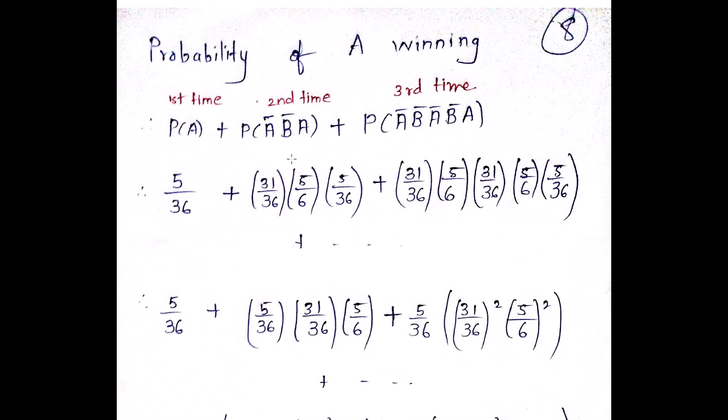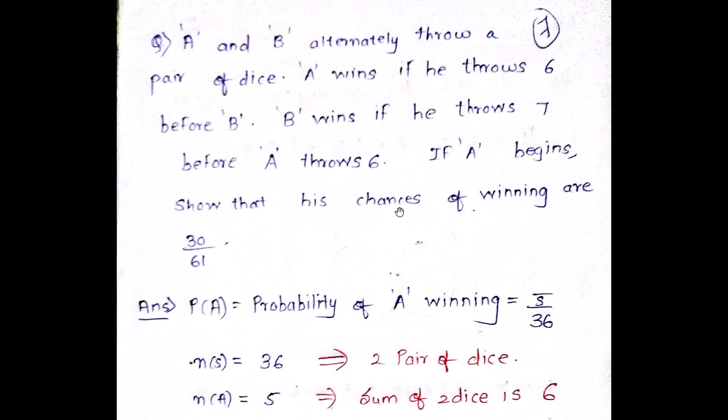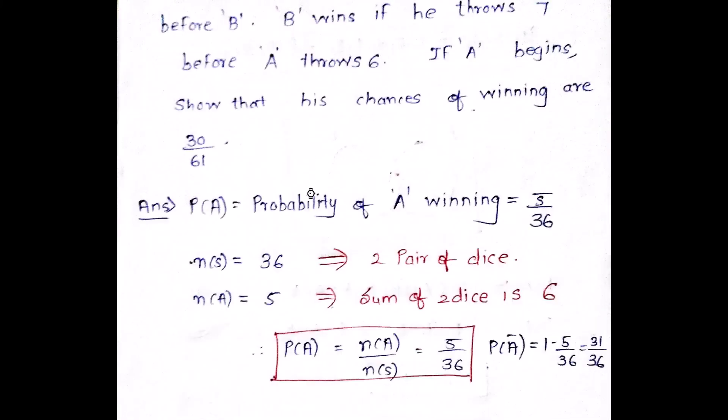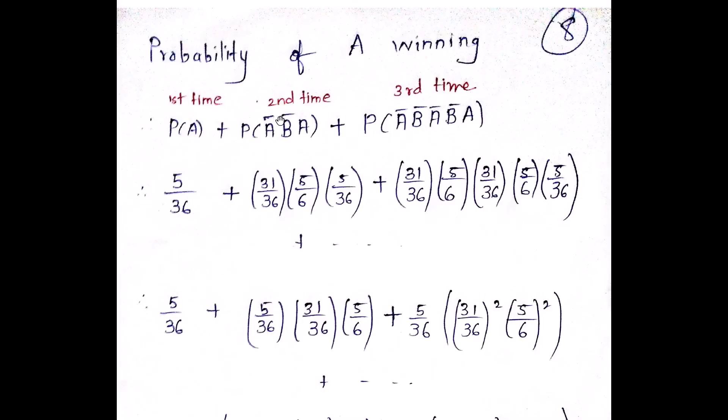Then it will be P of A bar and P of A bar is given as 31 by 36. You cannot take P of B. You have to take P of B bar only. Because B cannot win, because the question says, what is the probability of A only winning if he starts throwing the die. So B bar is taken directly as 5 by 6, which has been shown over here. Then again there is P of A, which is given as 5 by 36.